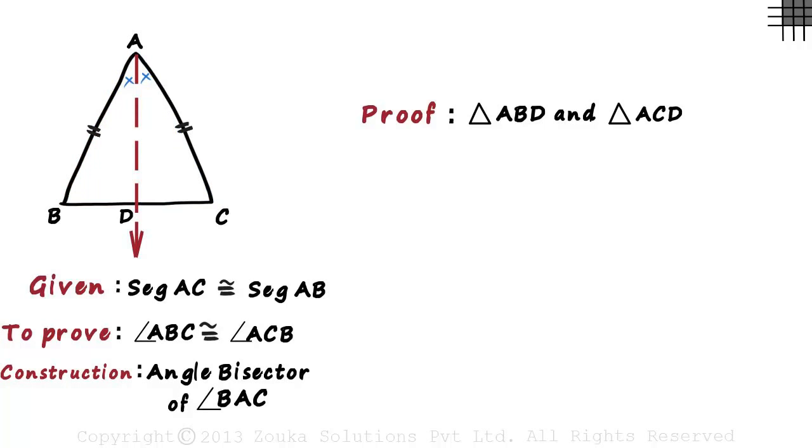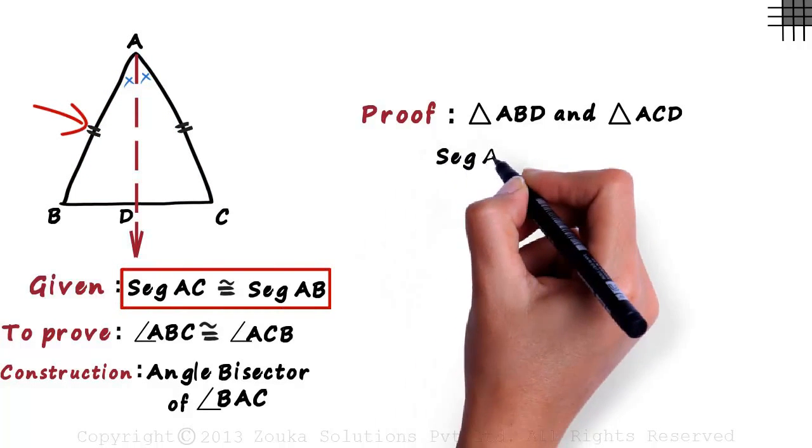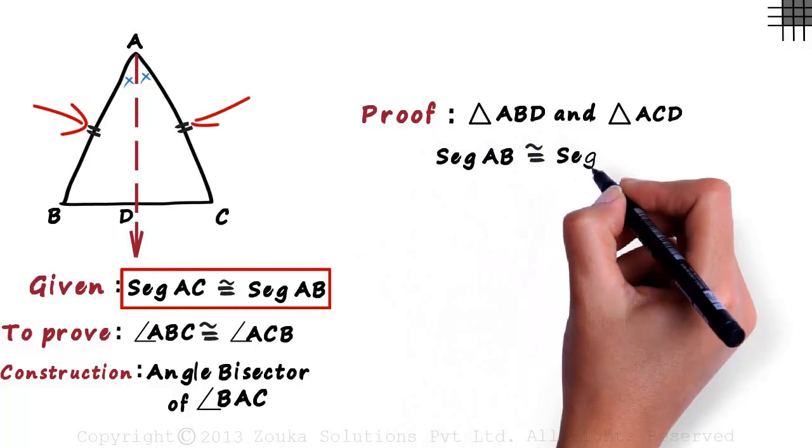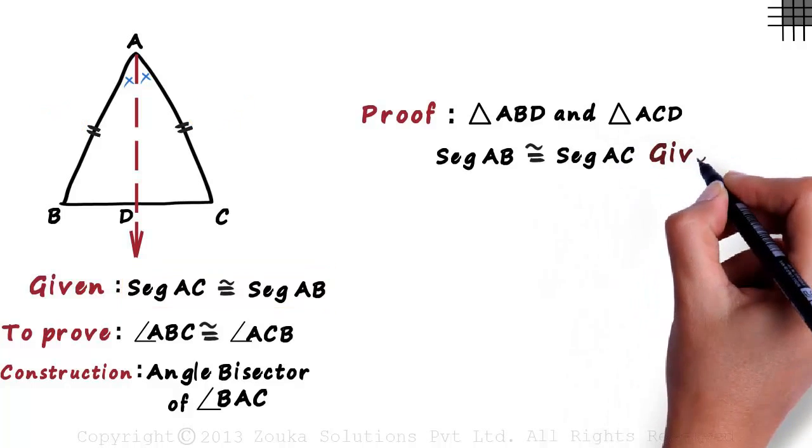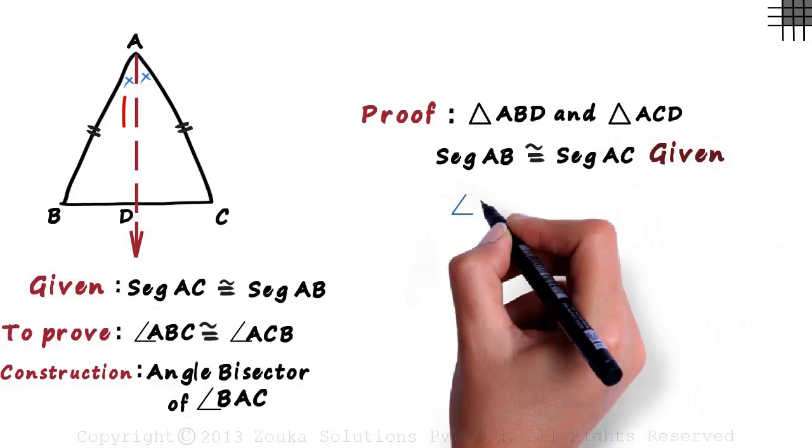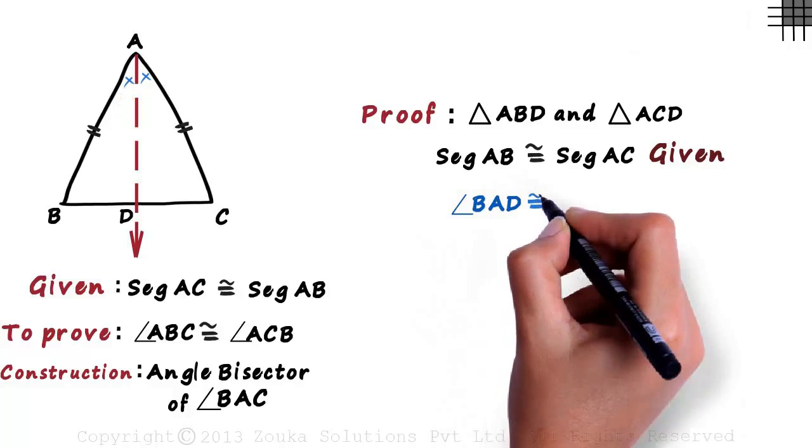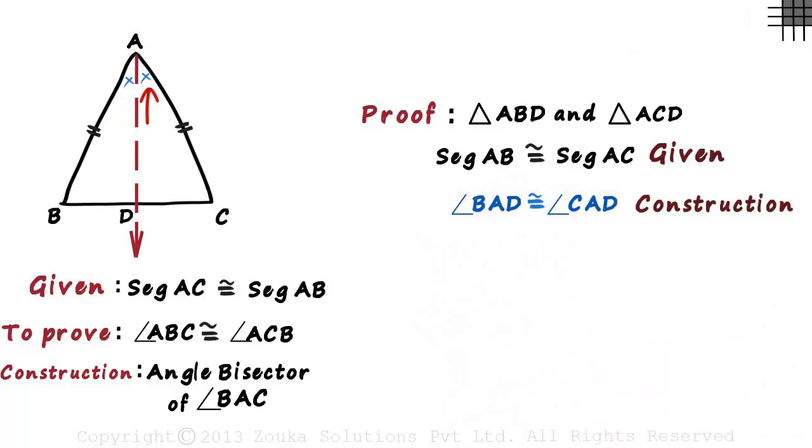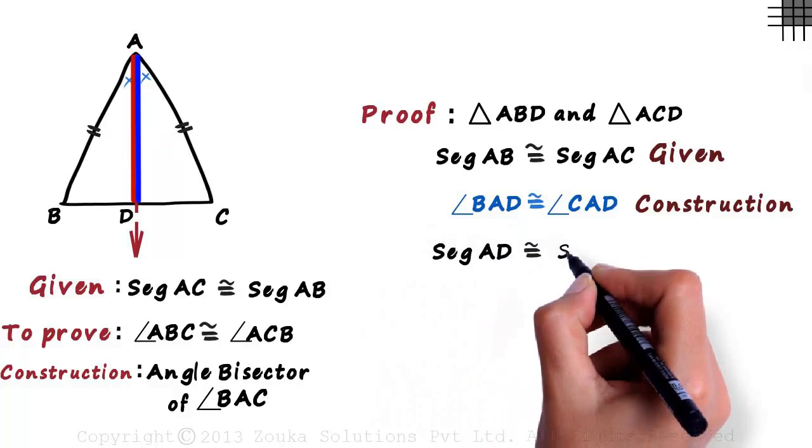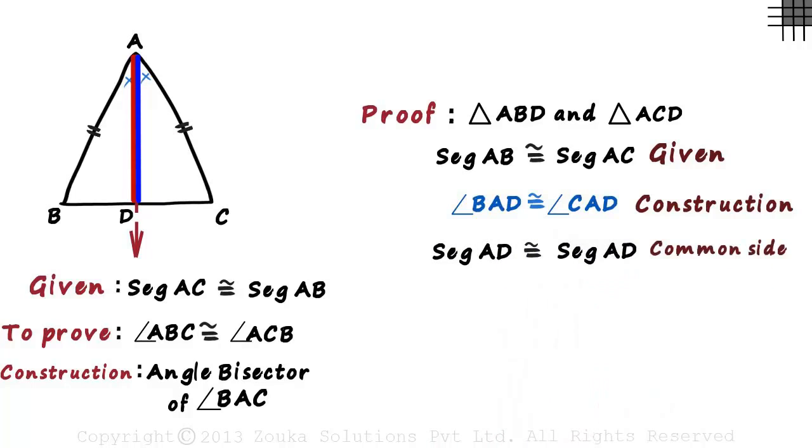Yes, we have been given that segment AB is congruent to segment AC. Based on our construction, we can also say that angle BAD is congruent to angle CAD. Now this is interesting. We can see that this side is common to both the triangles. We can say that segment AD is congruent to segment AD since it is the common side.